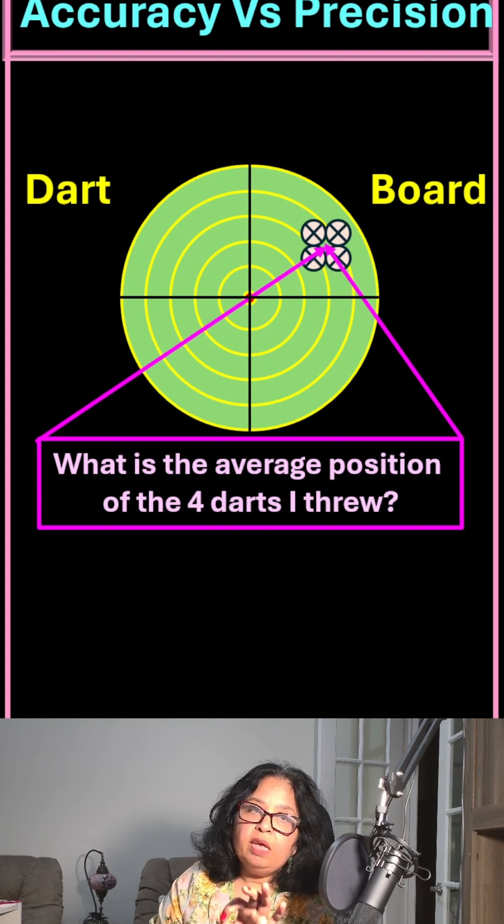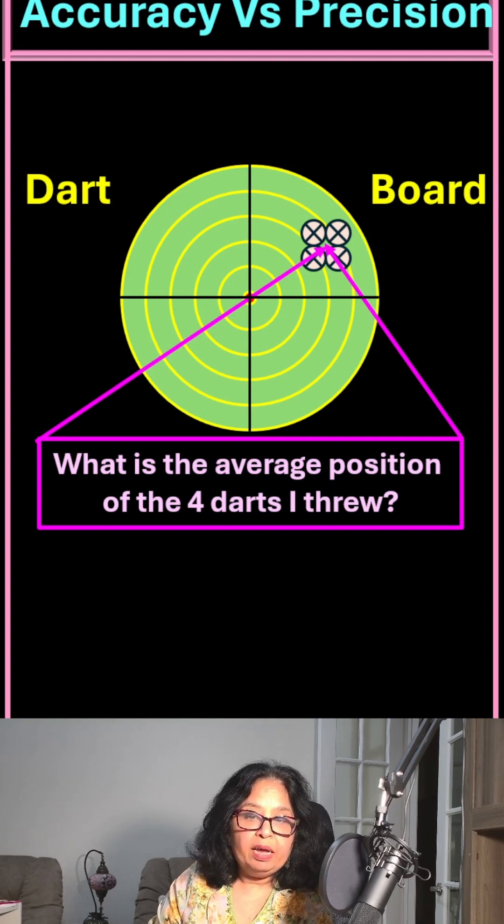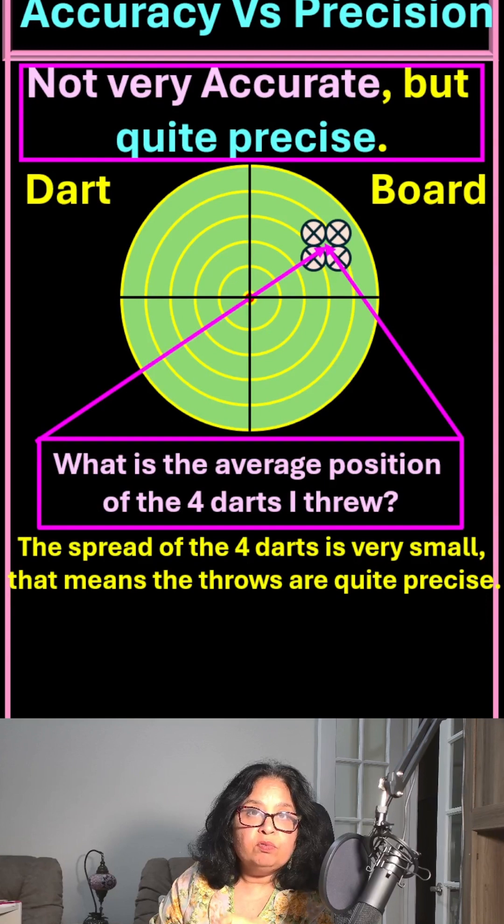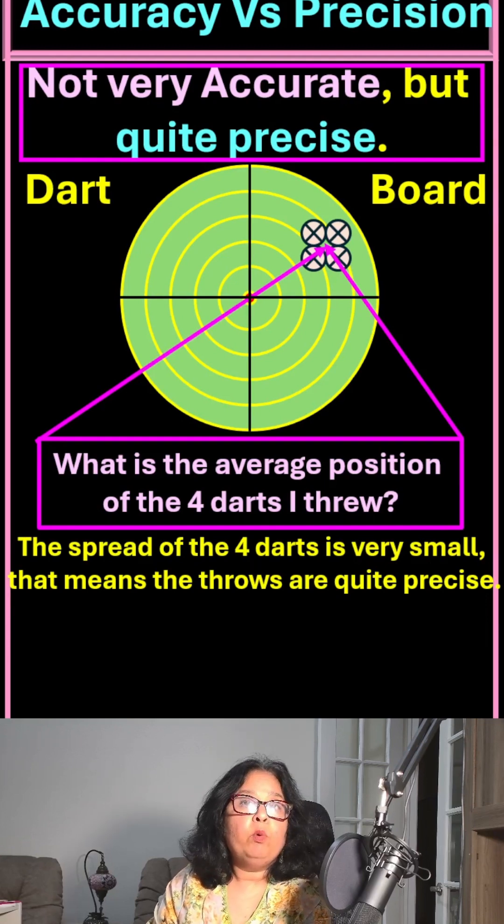You can see that this average position is not very close to the bullseye. So I'll say that I'm not very accurate. But since the spread between these four darts is very small, I will say that I'm quite precise.